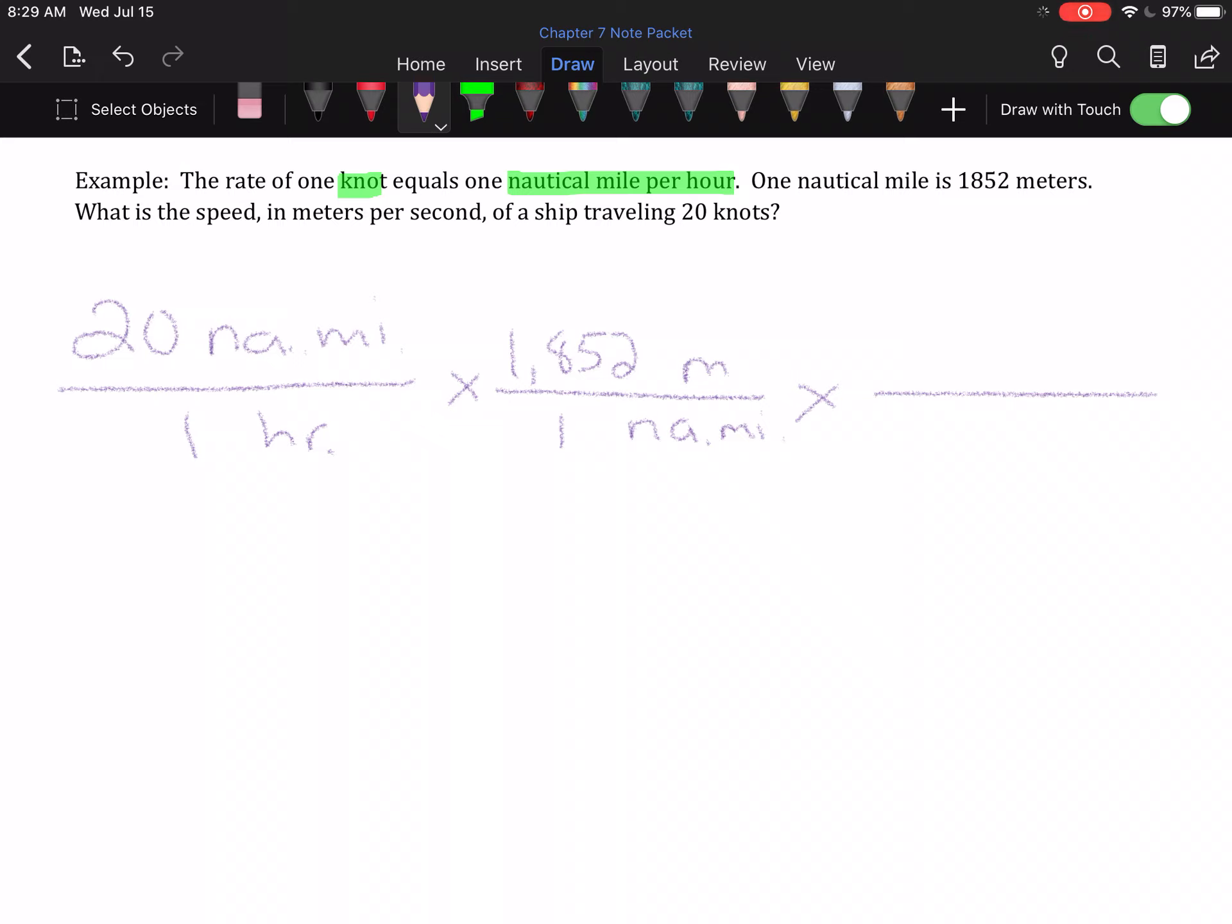We also have to change hours to seconds. So, hours will have to go on top to cancel, seconds on the bottom. But, we already know this. We figured it out before. There are 3,600 seconds in an hour. Nautical miles will cancel. Hours will cancel. So, when I multiply, I'm going to have 20 times 1,852 is 37,040 meters. And, in the denominator, we have 3,600 seconds.